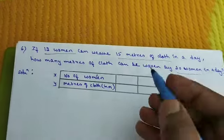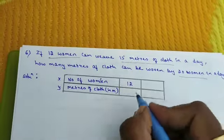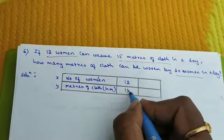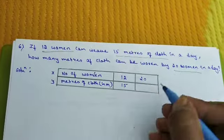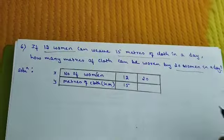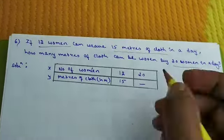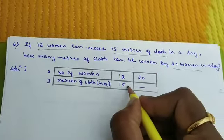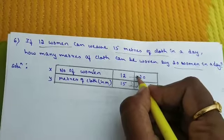Yes, it increases. So 12 women weave 15 meters of cloth, 20 women weave how many meters of cloth? Of course it will be greater than 15 meters. From here to here it is increasing and here also it increases.